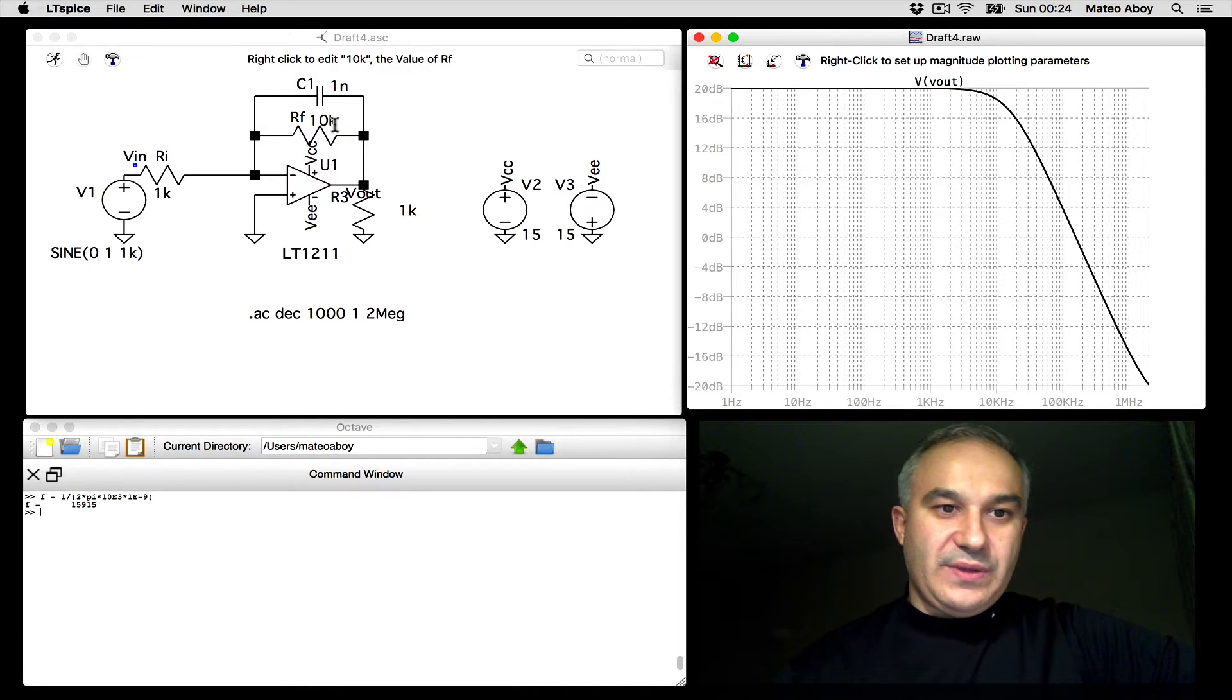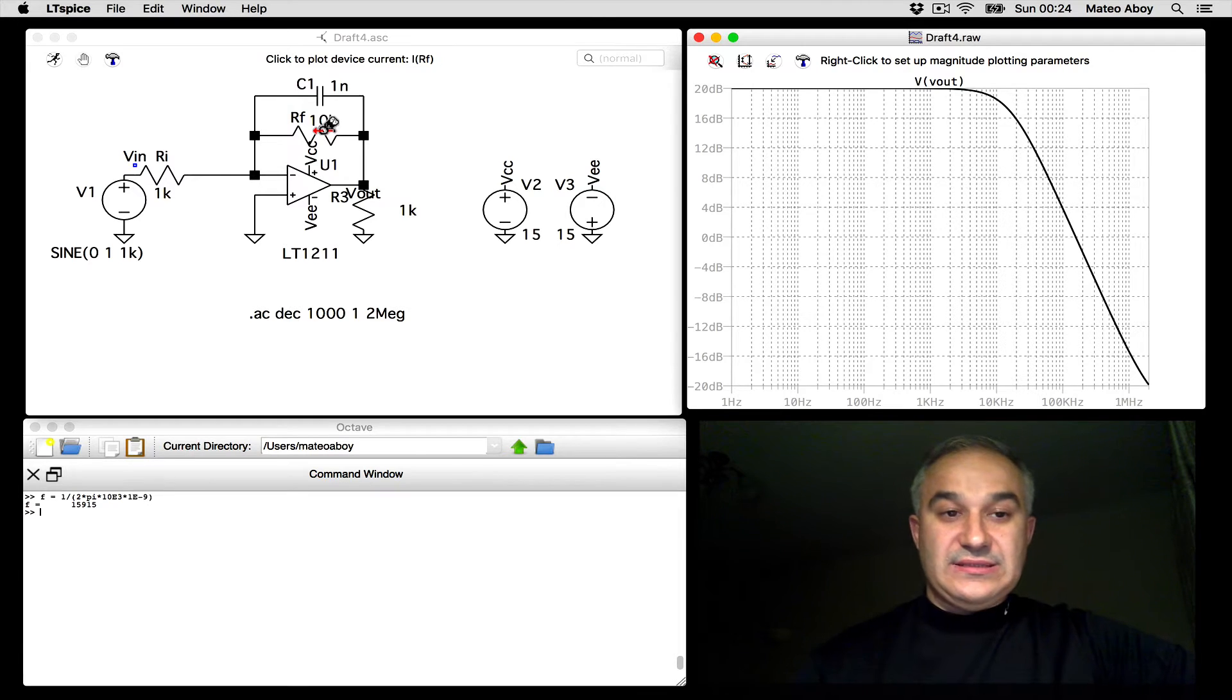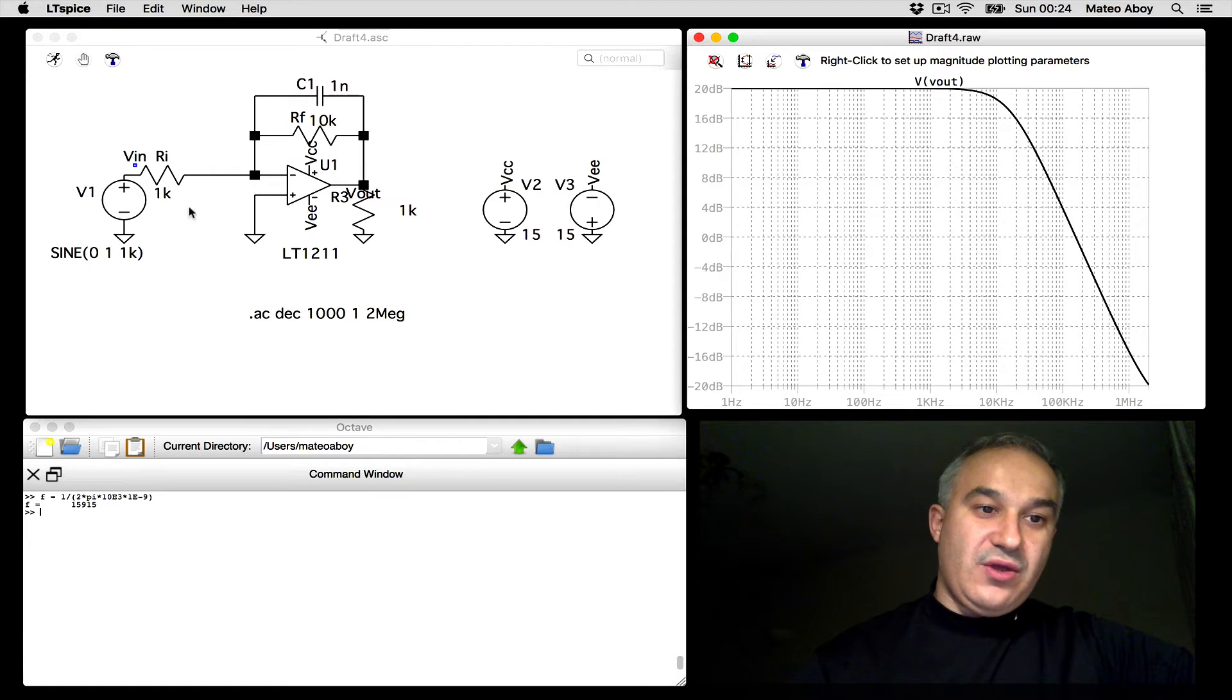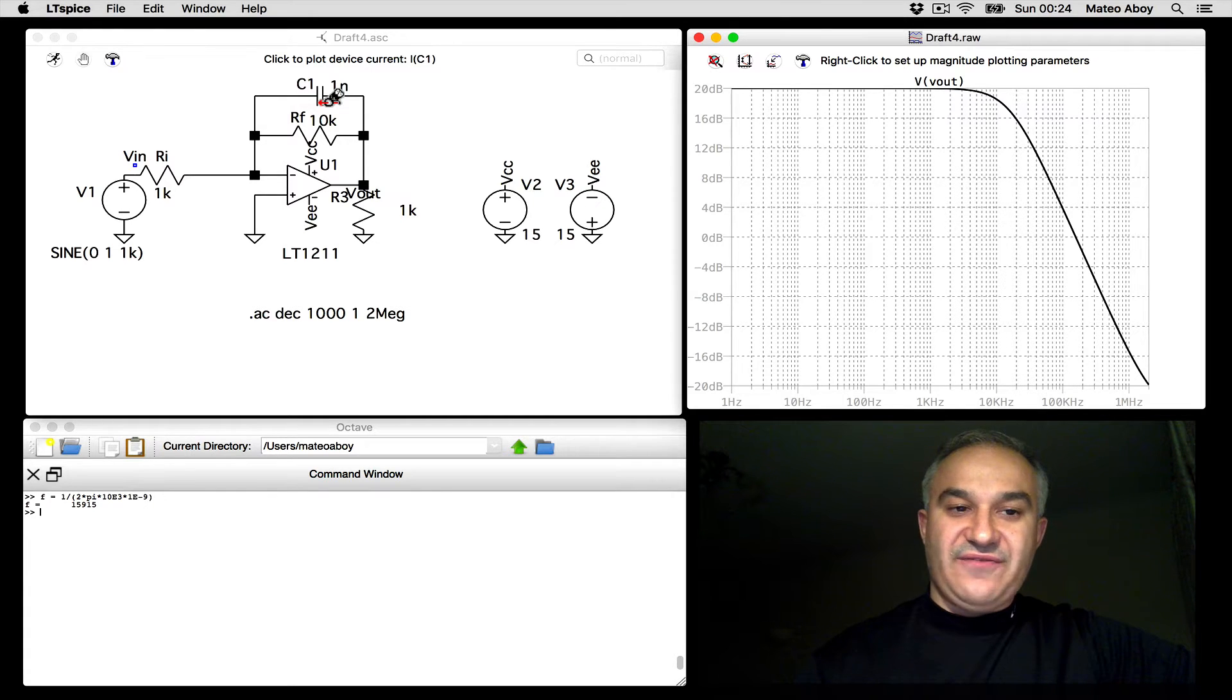Before the corner frequency, the gain is going to be given as Rf or minus Rf over Ri. 10K over 1K is a gain of 10. You can see that at DC, the capacitor is an open. And so this is just an inverting amplifier.